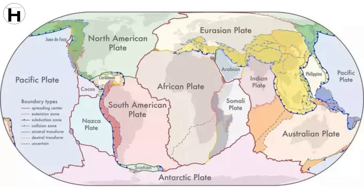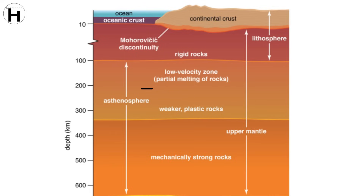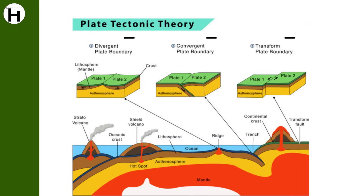The lithosphere, which is the rigid outermost shell of a planet, is broken up into tectonic plates that are floating over a ductile layer known as the asthenosphere. Where the plates meet, their relative motion determines the type of boundary, whether it's convergent, divergent, or transform. Earthquakes, volcanic activity, mountain building, and oceanic trench formation occur along these plate boundaries.